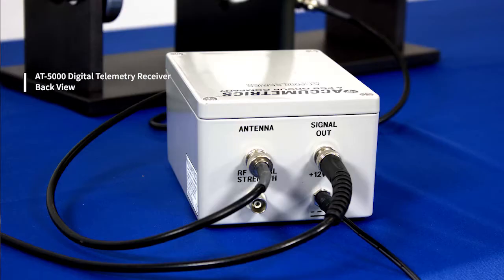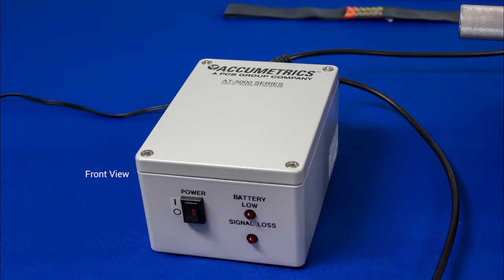The non-rotating receiver recovers the data from the rotor and provides analog output. The receiver also includes a light to indicate if the transmitter battery is low and another indicator for the loss of signal.